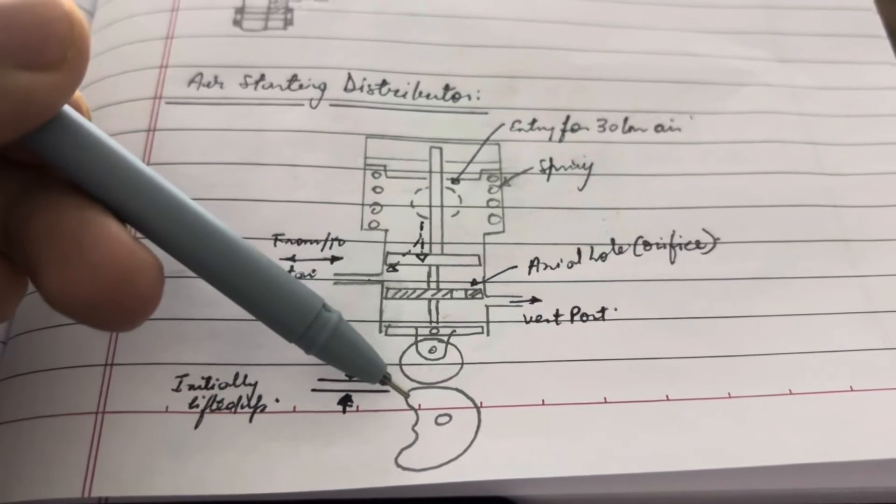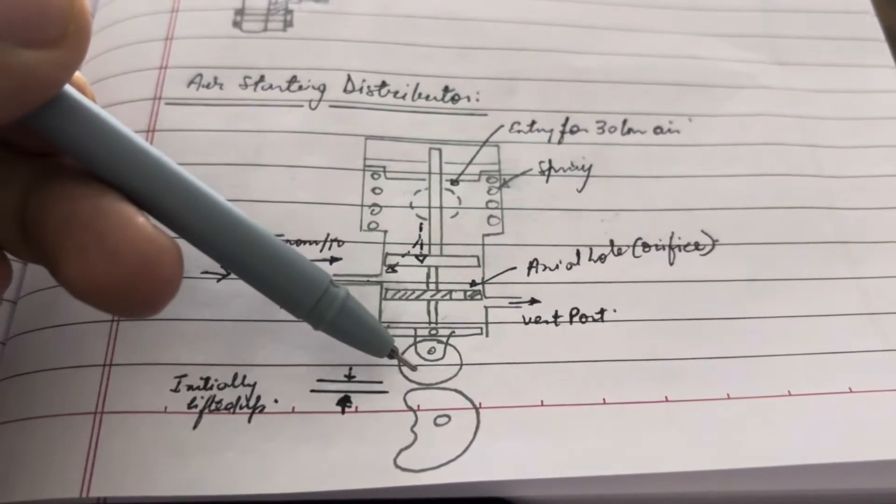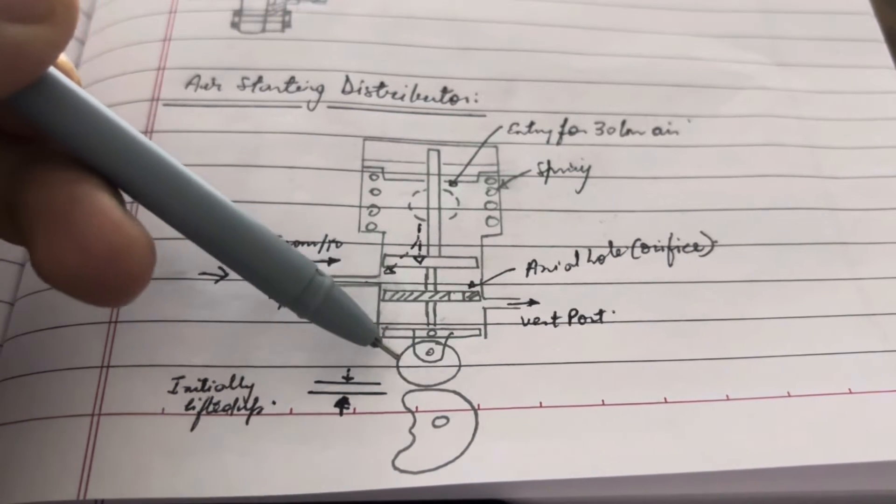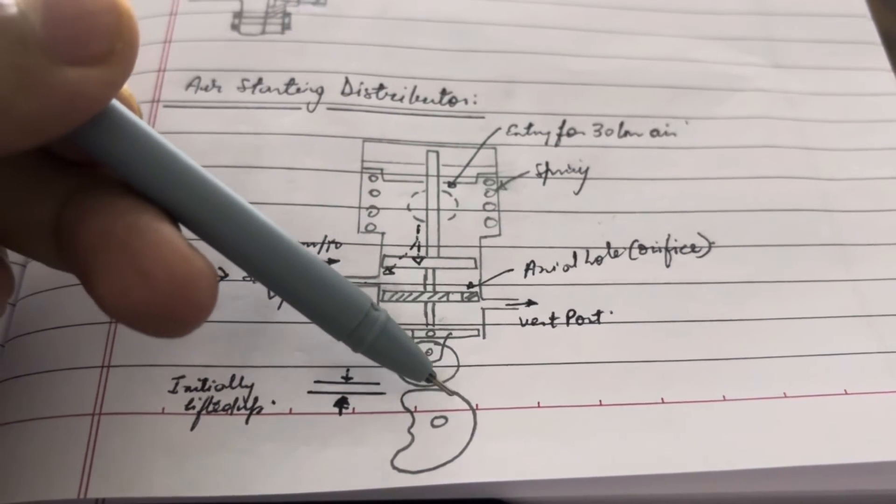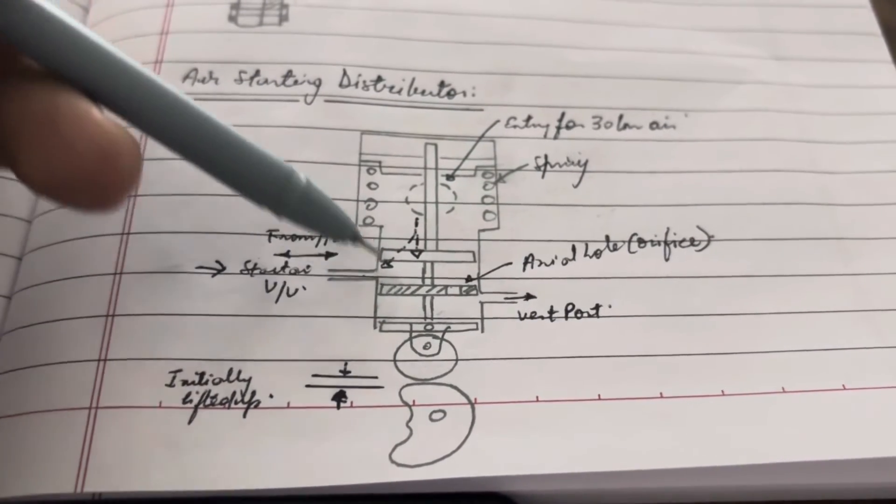The roller, when it is sitting on the actual cam profile—that is, the normal profile—there will be no actuation. That is, the hole will always be covered, as you can see now.